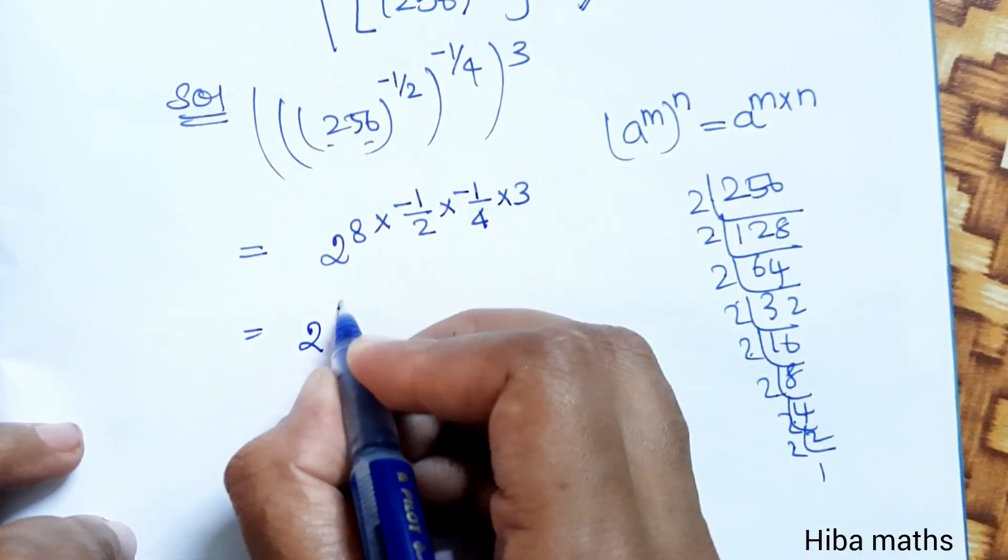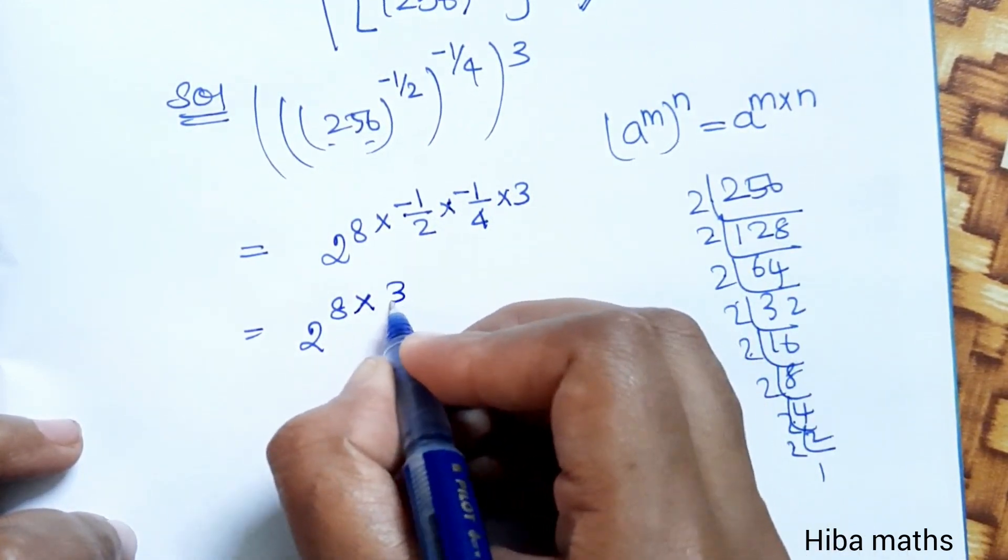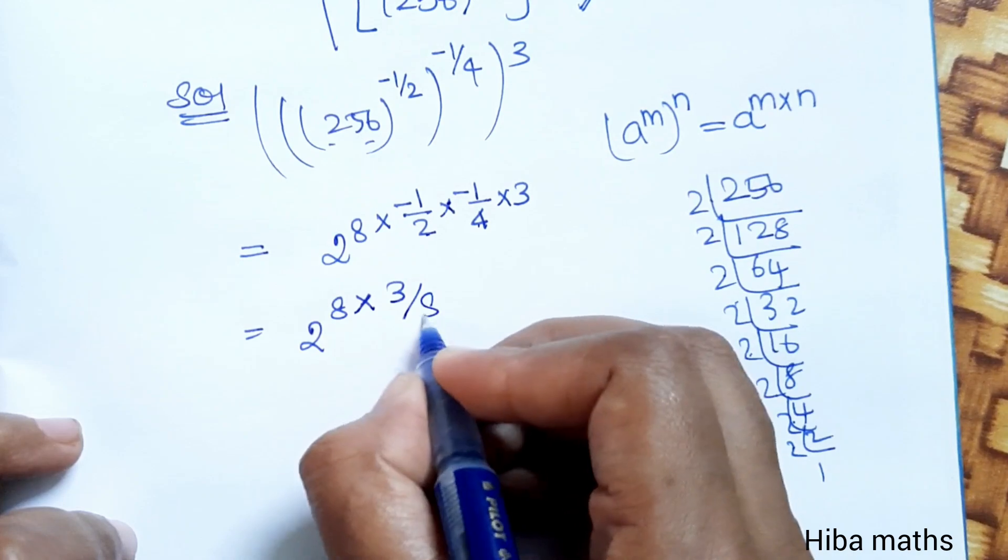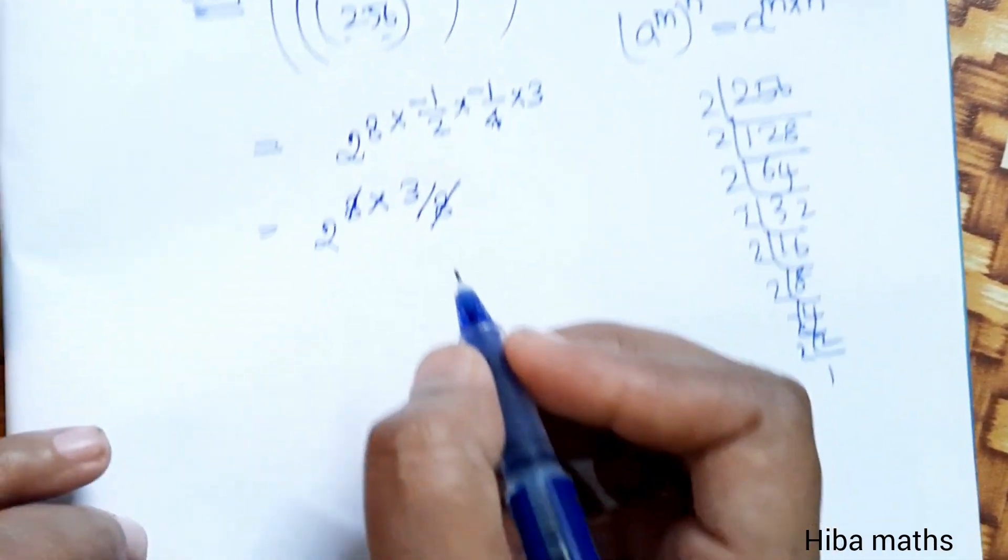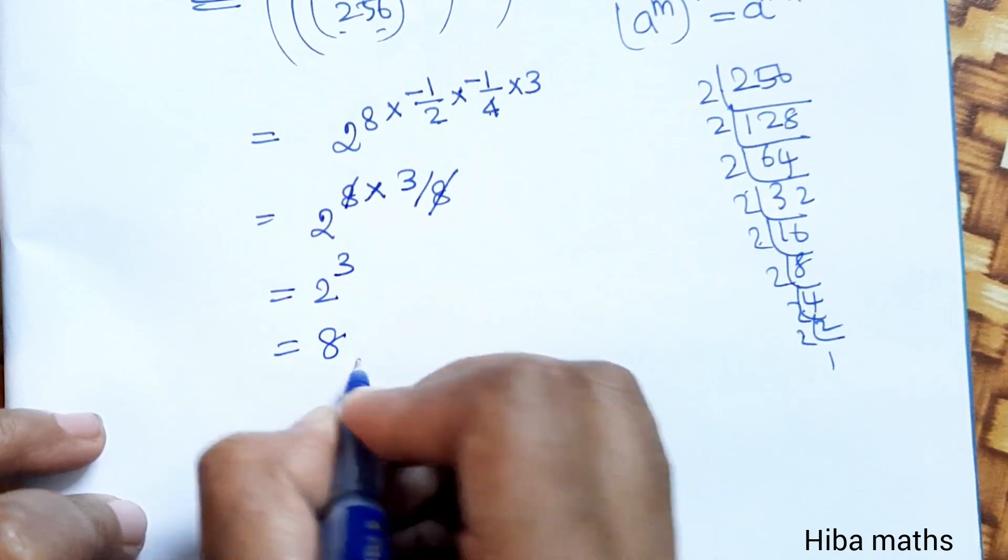So 2 power 8. Minus into minus is plus. 3 into 1, 3 divided by 2, 4s into 8 gives 2. We cancel and get 2 power 3 only, which is equal to 8.